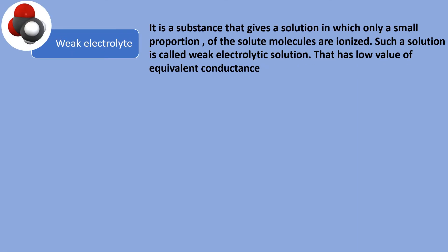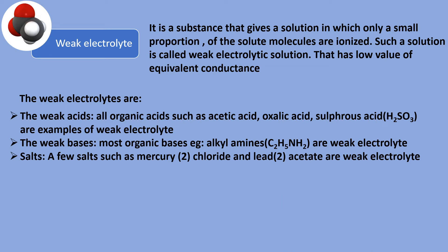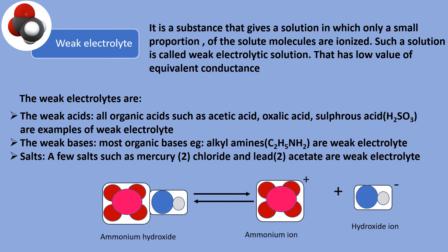A weak electrolyte is a substance that gives a solution in which only a small proportion of the solute molecules are ionized. Such a solution has a low value of equivalent conductance. Weak electrolytes are further classified as weak acids — all organic acids such as acetic acid, oxalic acid, and sulfurous acid — and weak bases, such as most organic bases, for example alkylamines. Ammonium hydroxide in aqueous state dissociates to give ammonium ion plus hydroxide ion. The ionization of weak electrolytes is represented with a double-headed arrow, suggesting the reaction is reversible.